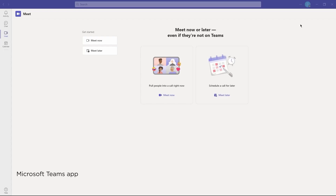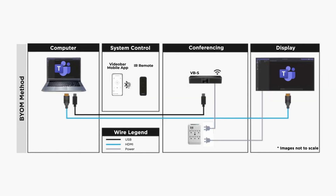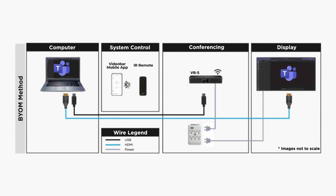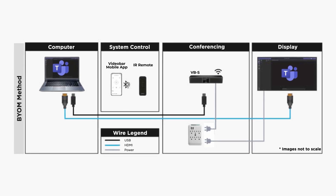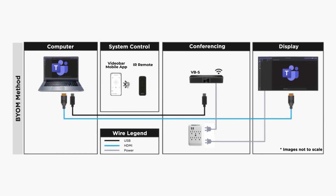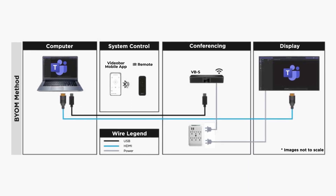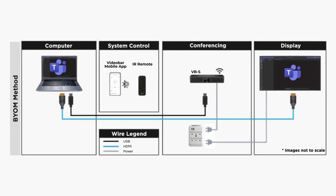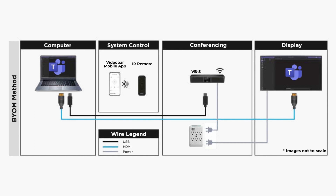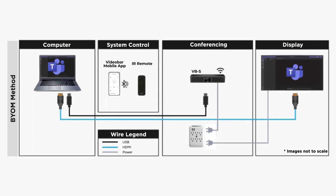Now you're ready to join a meeting. Please note: if you would like to share the content on your in-room display when using a VBS, you'll need to connect an HDMI cable between your computer and the display.